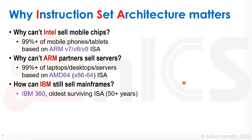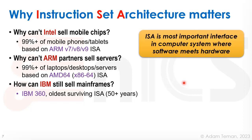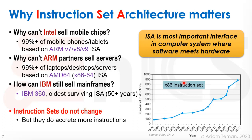And a really strange question is: how can IBM still sell mainframes? We have mainframes built with the IBM 360 ISA, and they're still surviving 50-plus years later. It's because the ISA is the most important interface in computer systems, where the hardware meets the software.